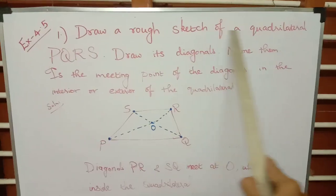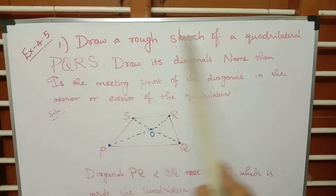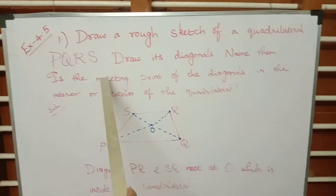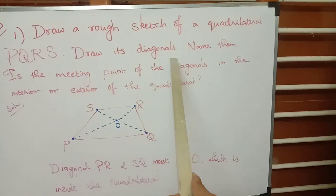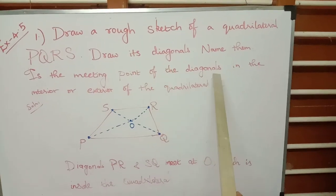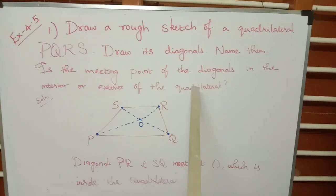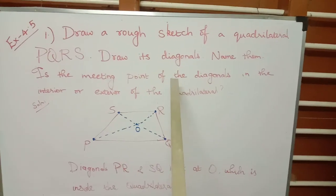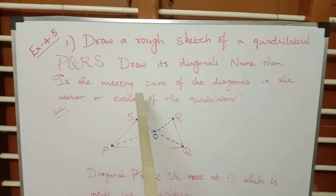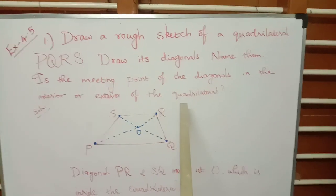Draw a rough sketch of a quadrilateral PQRS — you have to draw a rough diagram of a quadrilateral and name the points as PQRS. You have to draw its diagonals and label them. Is the meeting point of the diagonals in the interior or exterior of the quadrilateral? That is what we have to find out.